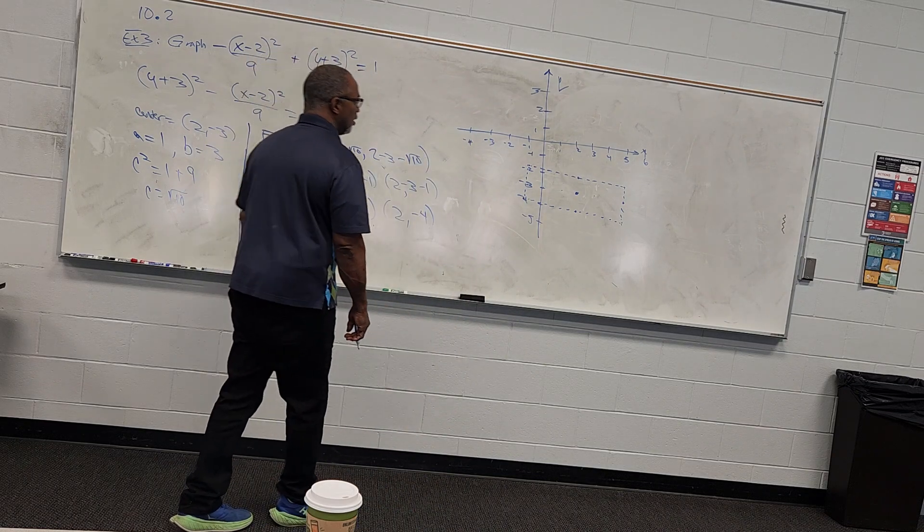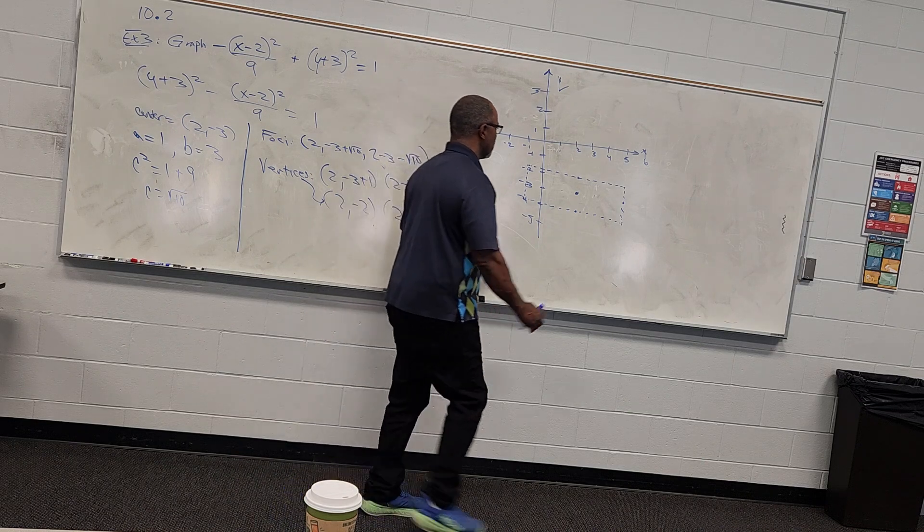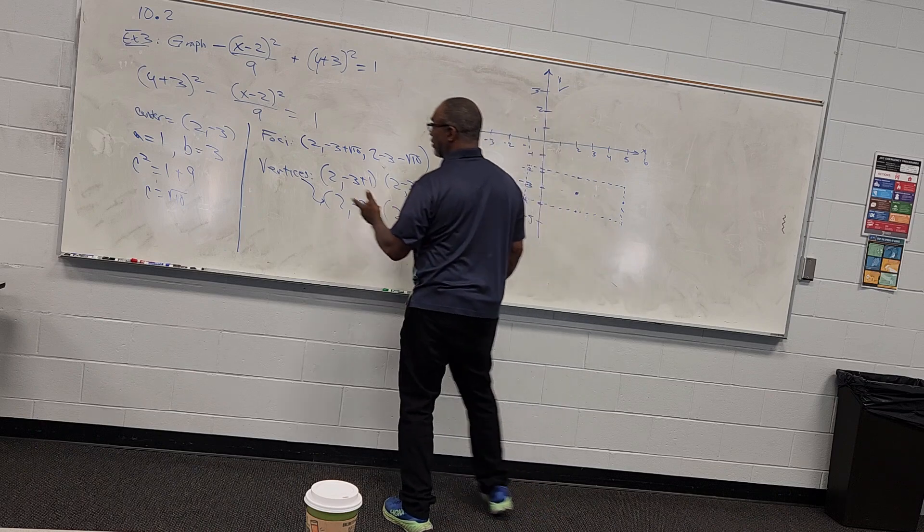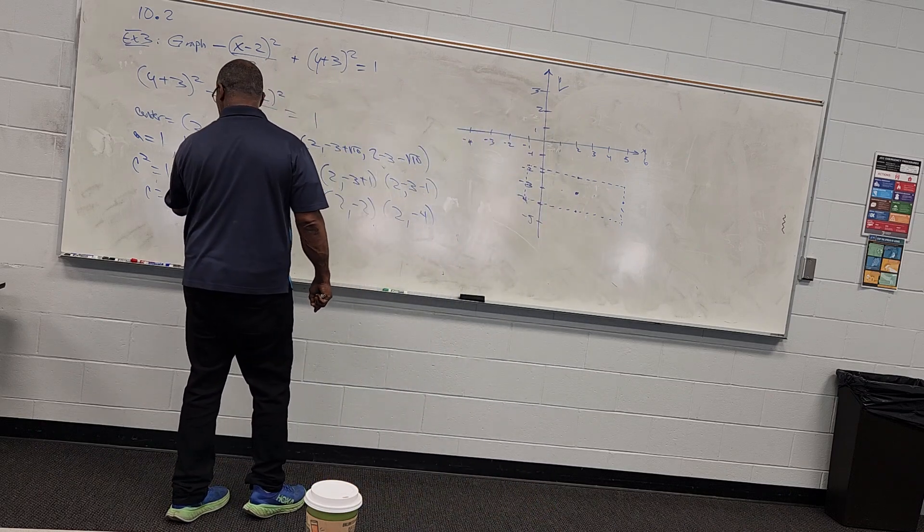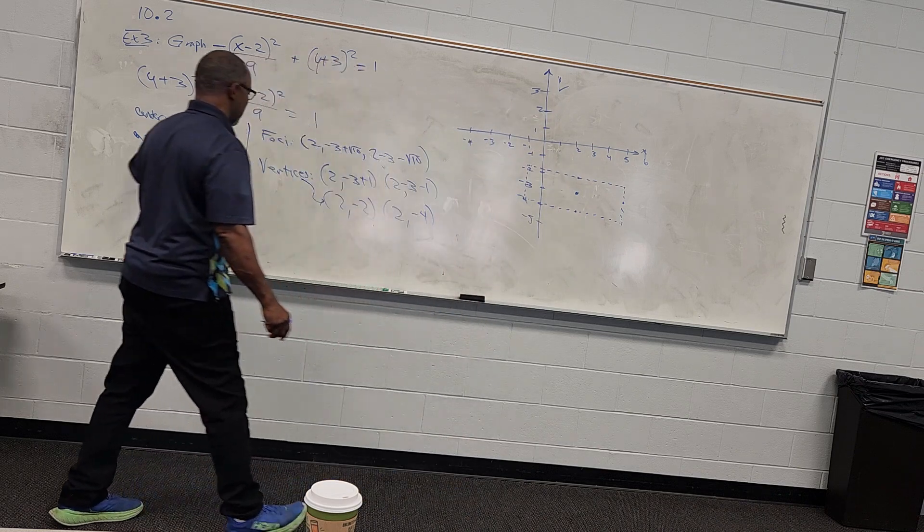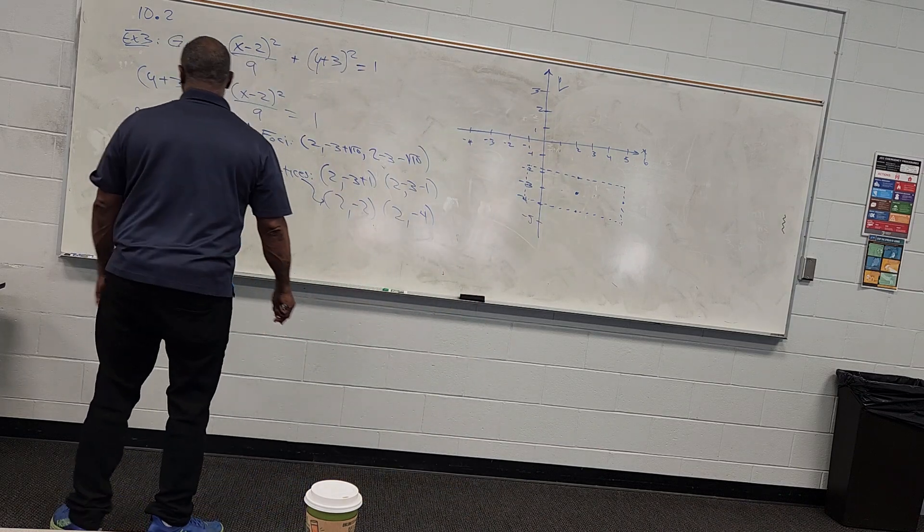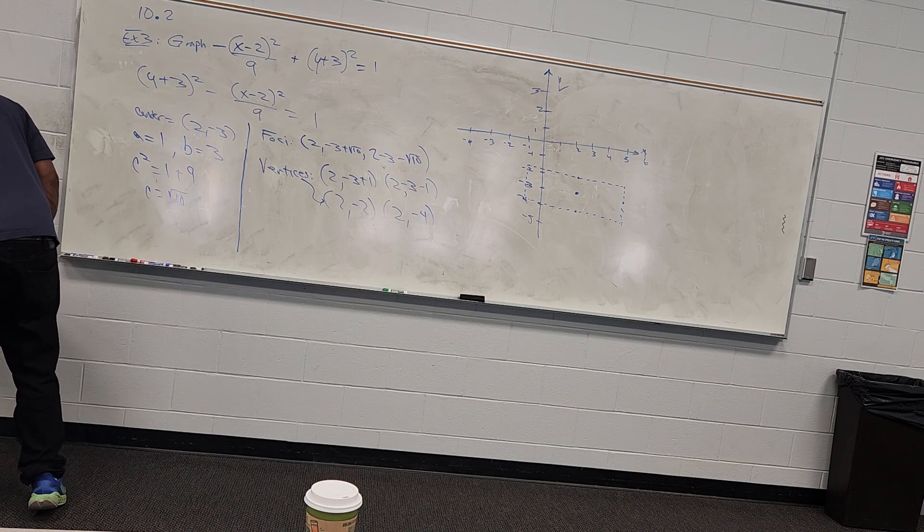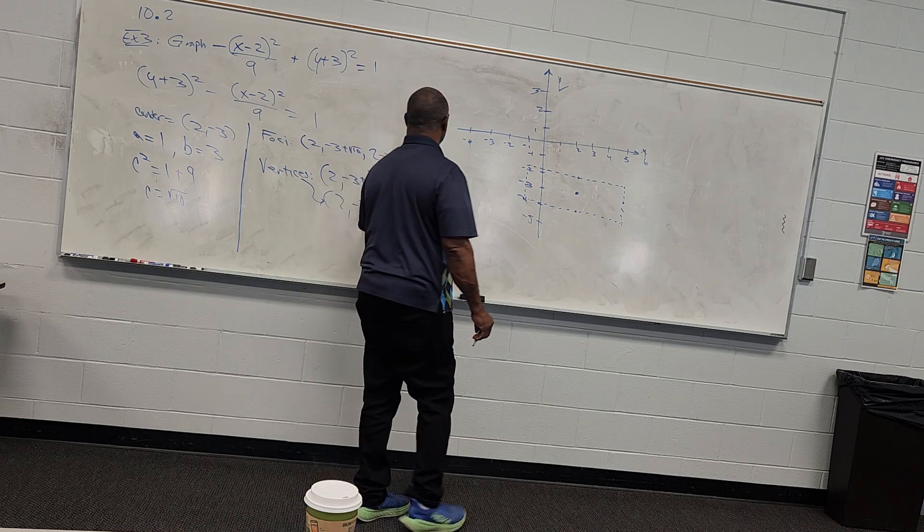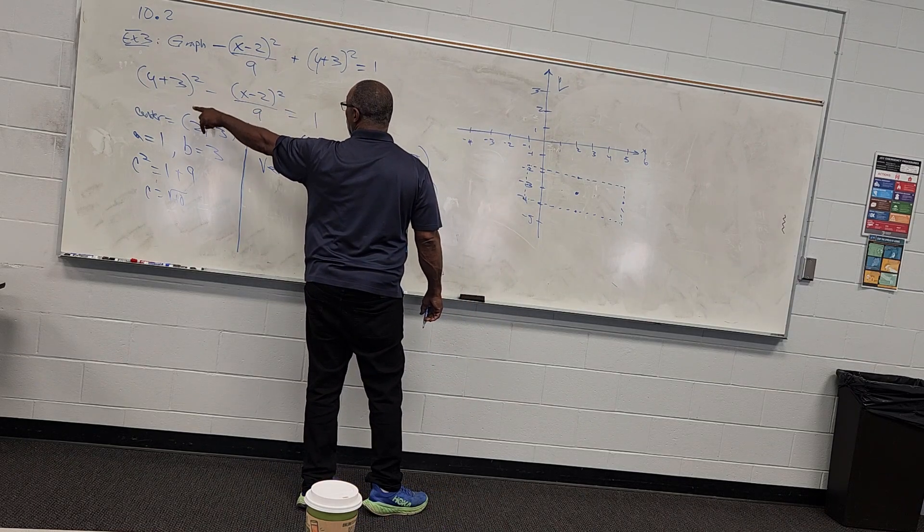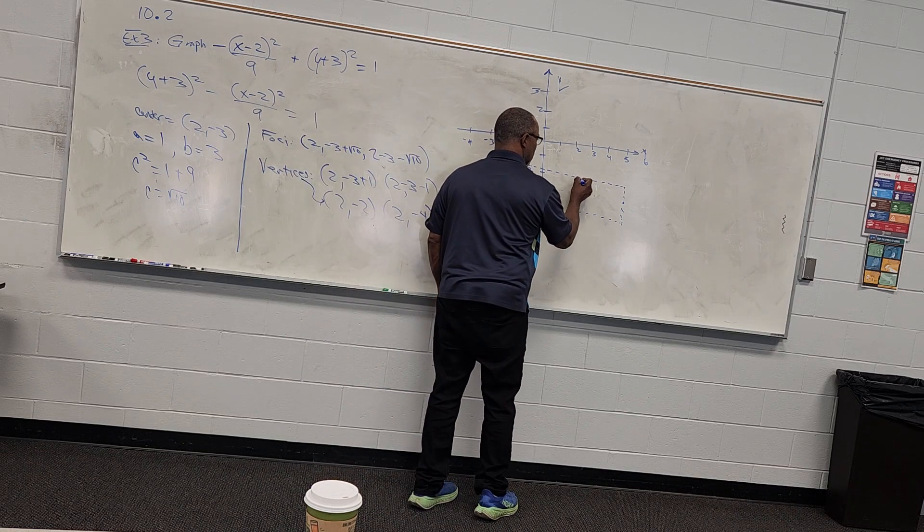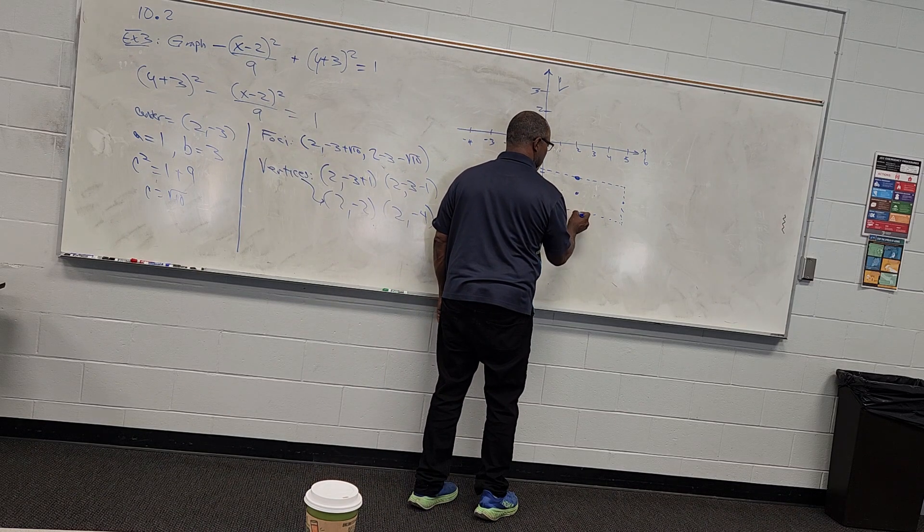My box is there. My box is a 2 by 6 box, 6 units wide, 1, 2, 3, 4, 5, 6. That's just twice the value of b. And 2 units high, that's just twice the value of a. Now I knew that I had a vertical transverse axis because I had y squared minus x squared. That means my transverse axis is vertical. So these are my vertices, right here and right here.